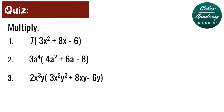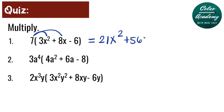Question 1: 7 times 3x squared plus 8x minus 6. We distribute 7 times 3x squared: 7 times 3 is 21, and we have the variable x squared. Next, multiply 7 times 8x: 7 times 8 is 56 and we have the variable x. And finally, 7 times negative 6 is negative 42. So the answer for number 1 is 21x squared plus 56x minus 42.